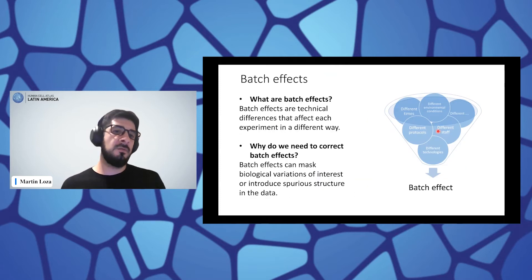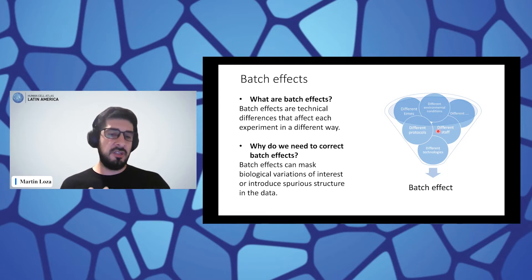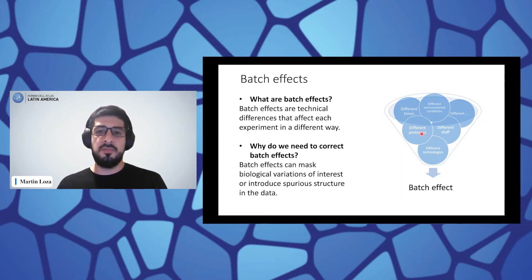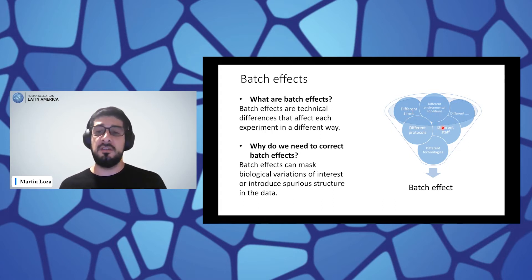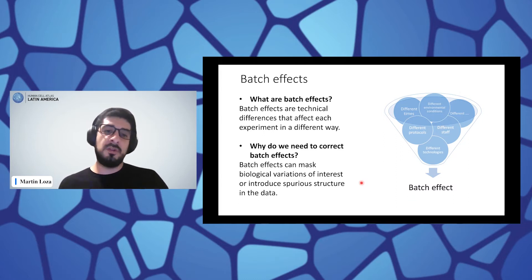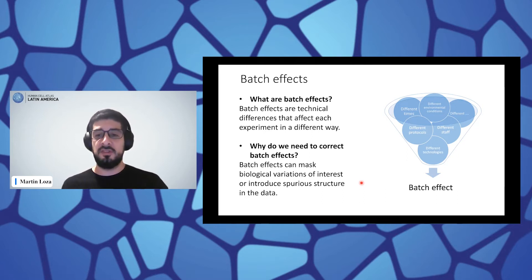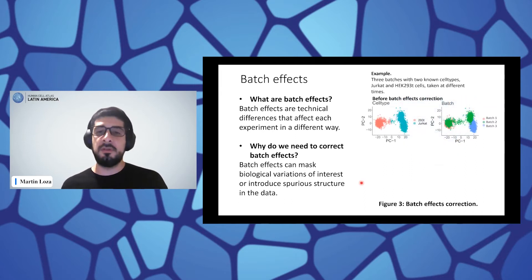Let's define what batch effects are. Batch effects are technical differences that affect each experiment in a different way. We talk about technical differences like different protocols, different times of the samples, environmental conditions, or even just the samples themselves. All these technical differences sum up and create a distinct batch effect on each sample. We need to correct batch effects because they can correlate with the real biological differences we are trying to investigate.